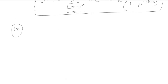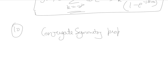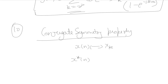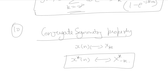The next property is the conjugate symmetry property. According to this property, if x[n] and x[k] are a Fourier series pair, then the Fourier series coefficient of the conjugate x*[n] will be x*[−k]. This is the conjugate symmetry property of discrete time Fourier series.